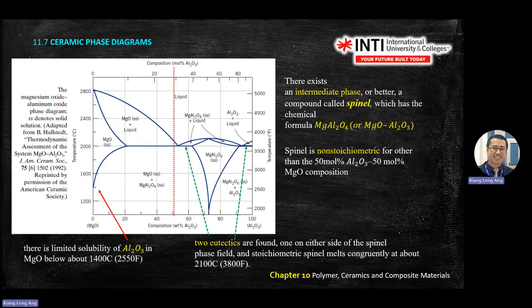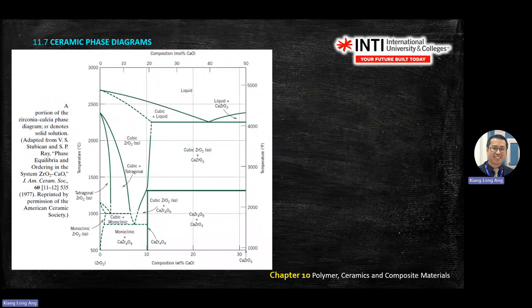There is spinel forming around that temperature. The next diagram is for ZrO₂-CaO (zirconia-calcia). What remains important is identifying: where is liquid, where is solid, left-hand side versus right-hand side, and identifying reactions from the table — eutectic, eutectoid, monotectic, pro-eutectoid, and so on. The V-shaped liquid region indicates the eutectic point.